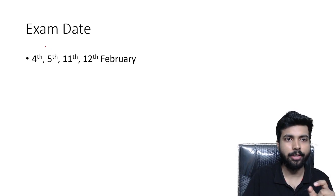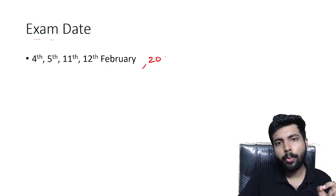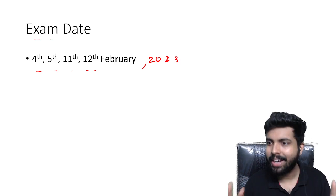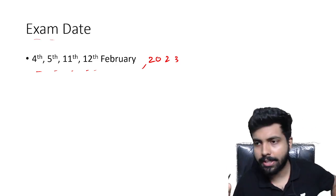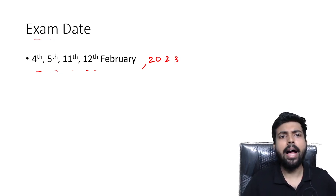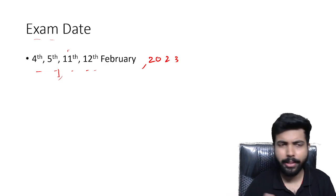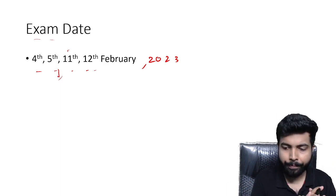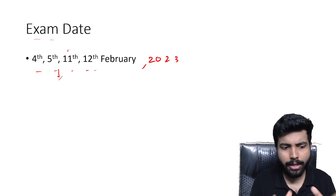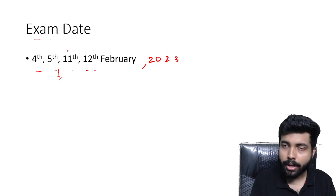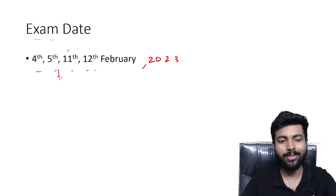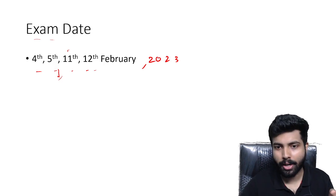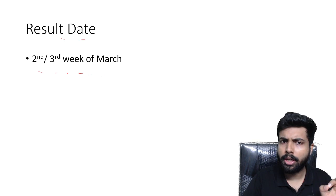The GATE 2023 exam dates are normally in February — specifically the 4th, 5th, 11th, and 12th of February, which are Saturdays and Sundays. Different streams have different exam dates; for example, Civil might be on the 5th and Mechanical on the 11th. Sometimes they also schedule three days — Friday, Saturday, Sunday — like 3rd, 4th, 5th and 10th, 11th, 12th. I'm praying there's no COVID again so we don't need extra days.